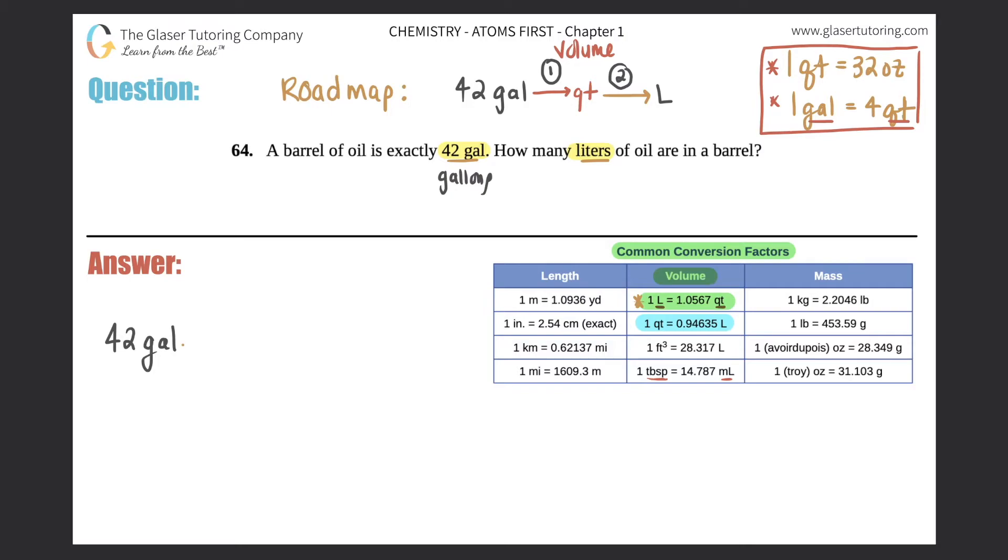Whenever you're converting, you multiply by a ratio. Now you don't want gallons, so remember gallons have to be on the opposite side - in this case it has to be on the bottom. And now if I look at my step number one, quarts are going to be on the top. And we know from the conversion that I gave you guys, one gallon equals four quarts, so the one has to go where the gallons are.